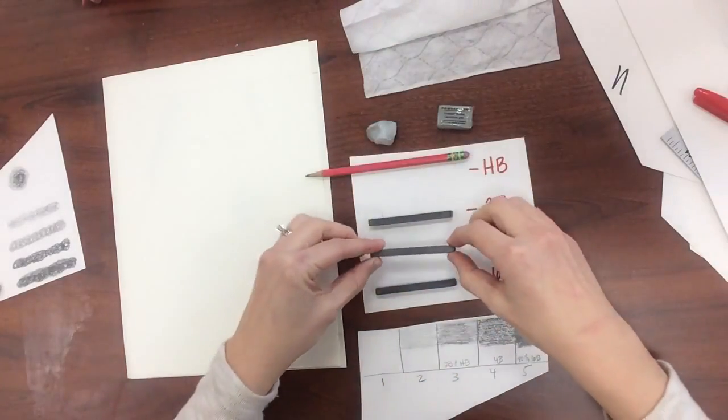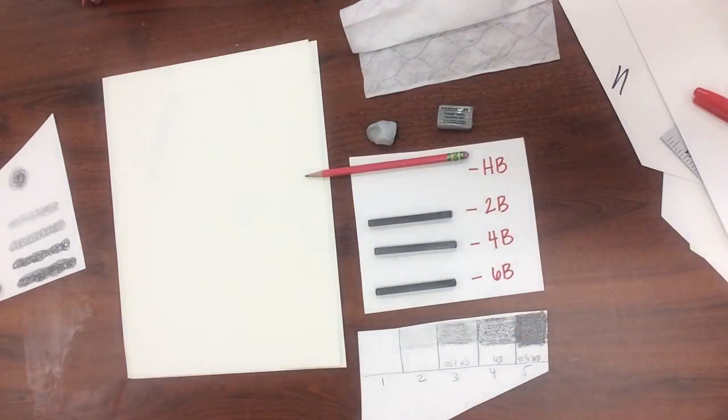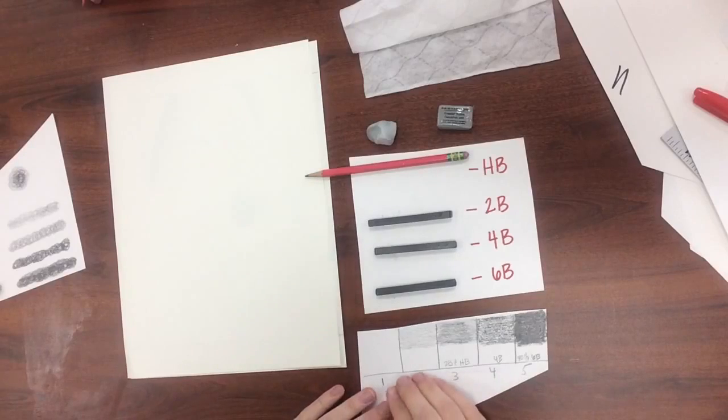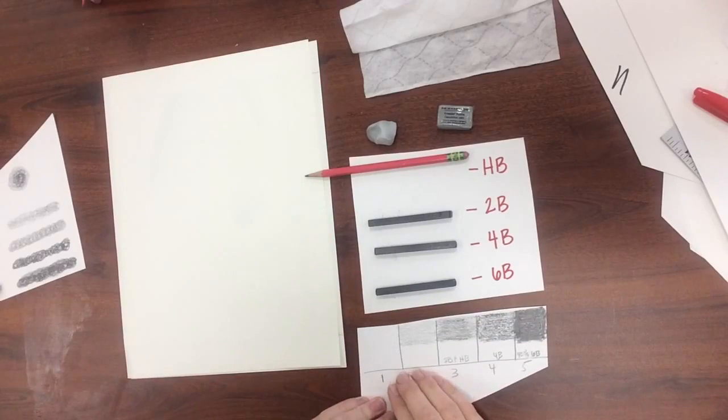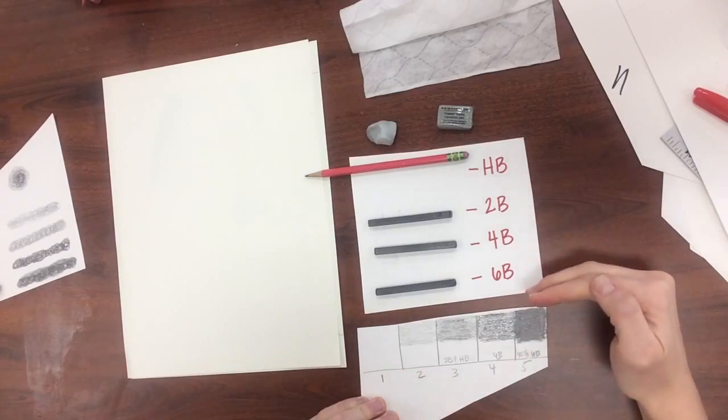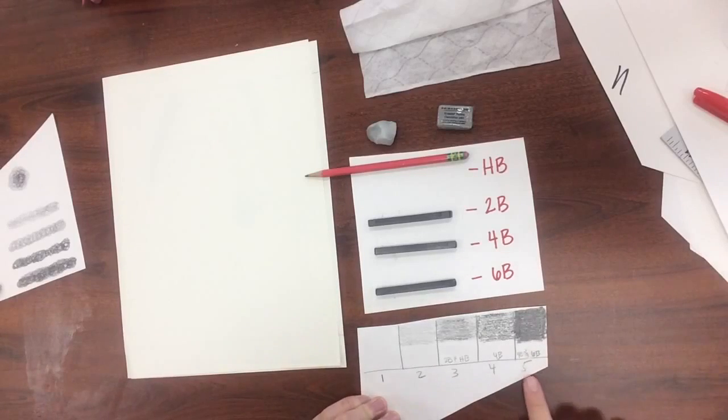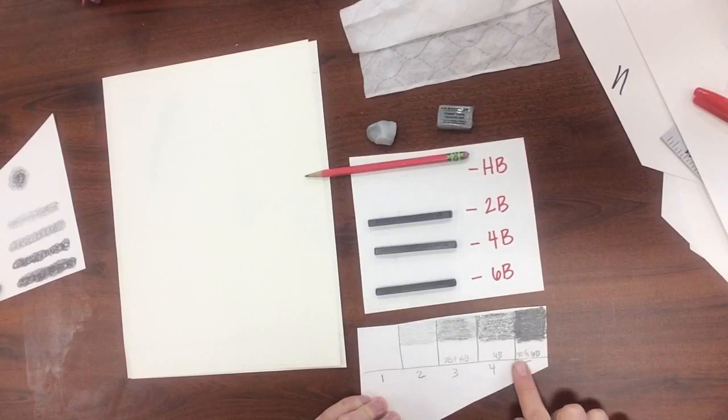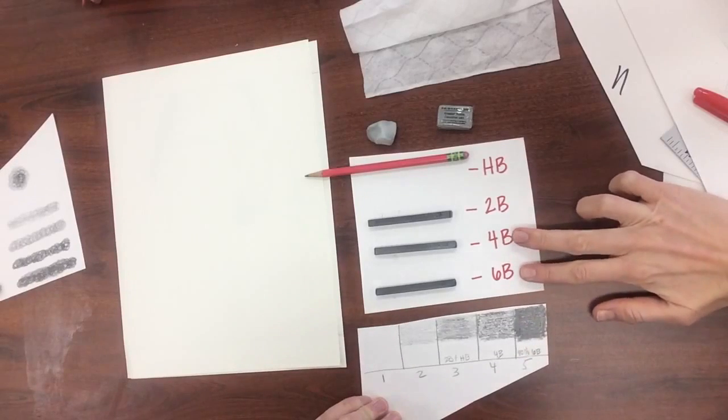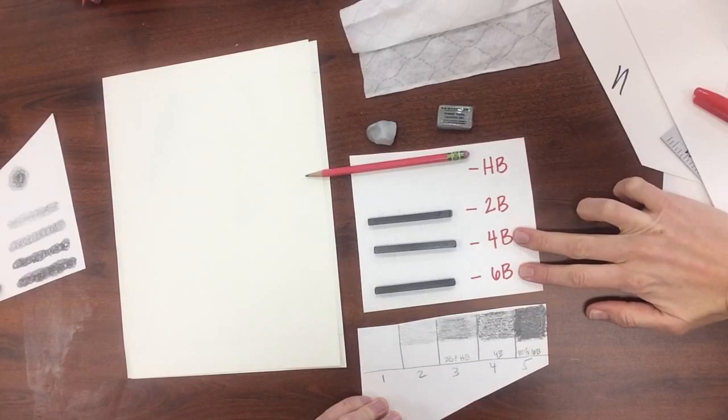So we're going to use graphite sticks to create our portrait. I've created a new value scale here and you need to do the same. And it's just up to you how you want to blend your graphite sticks to create your value scale. So for my number 5, I blended 4B and 6B, which are the two softest, which also are the two darkest.